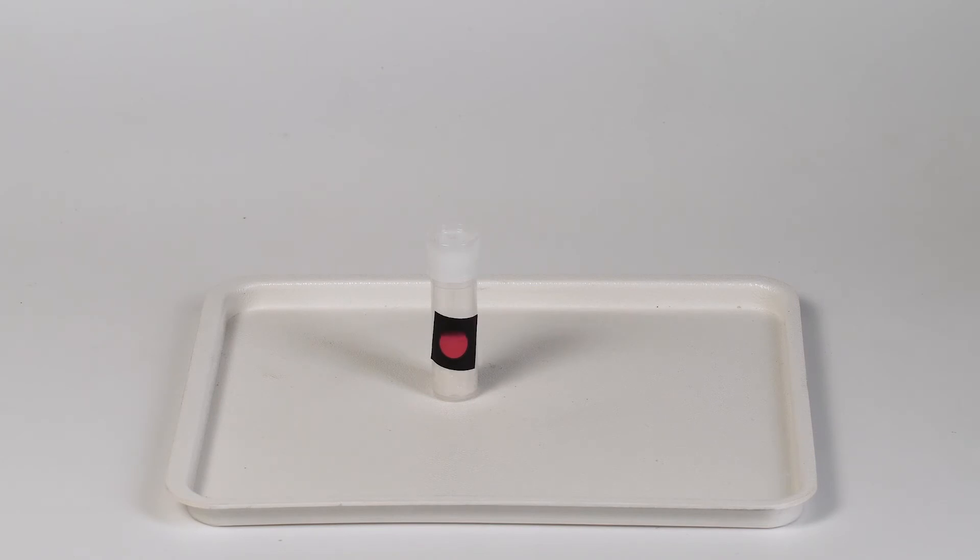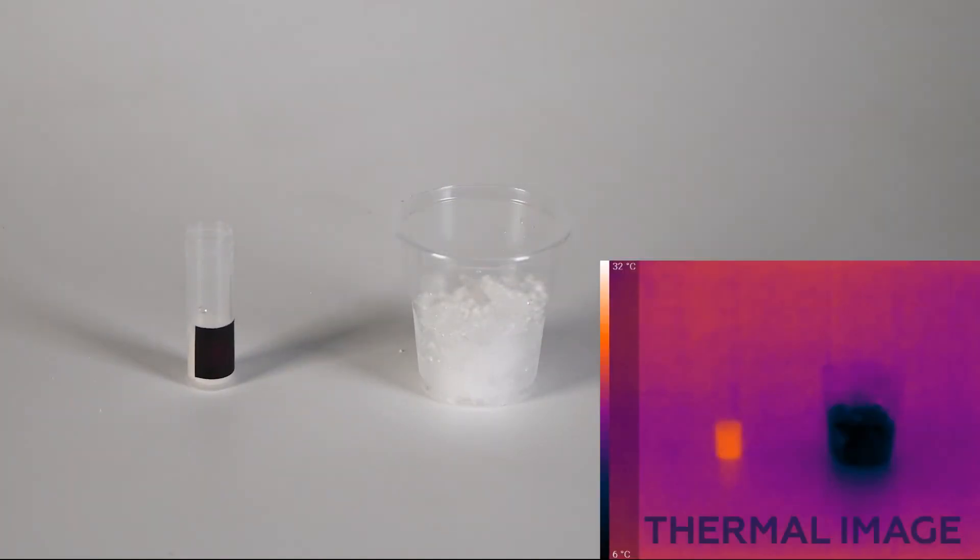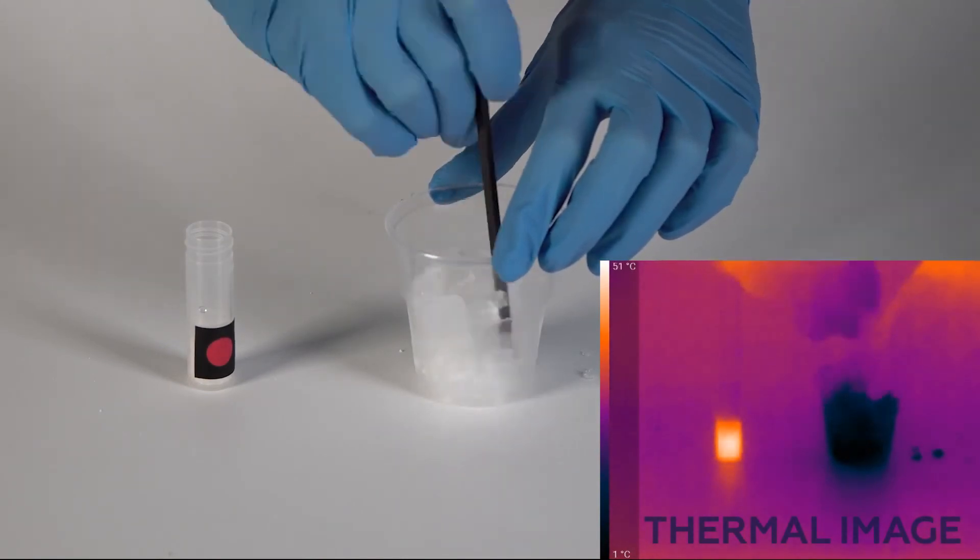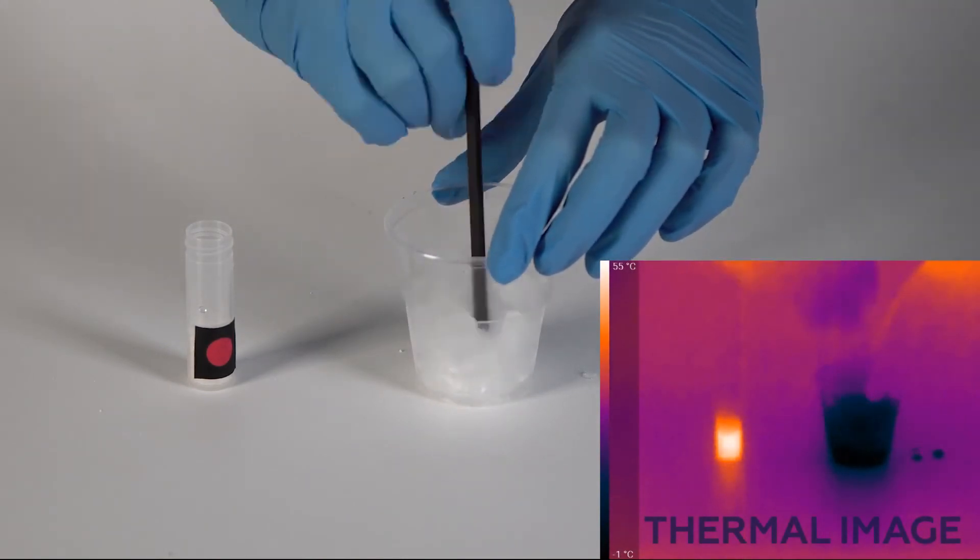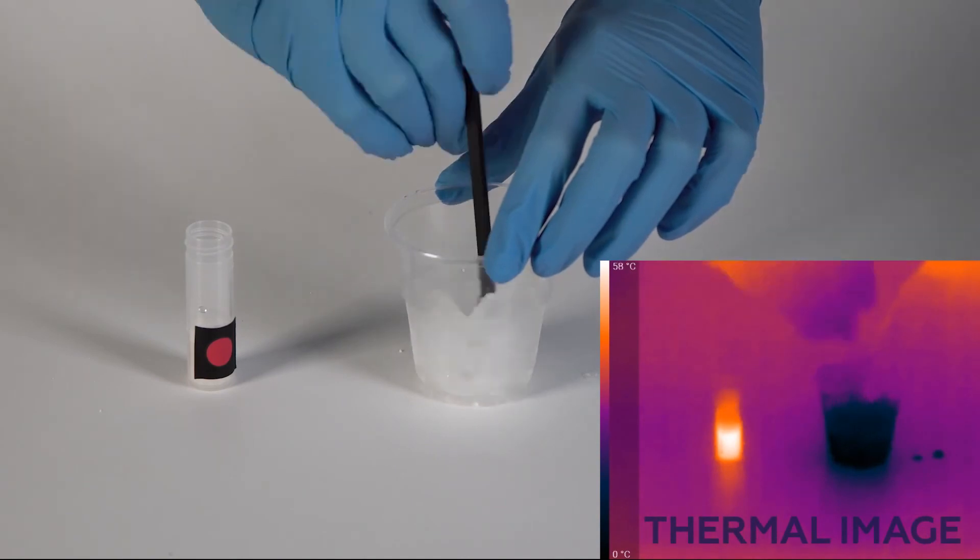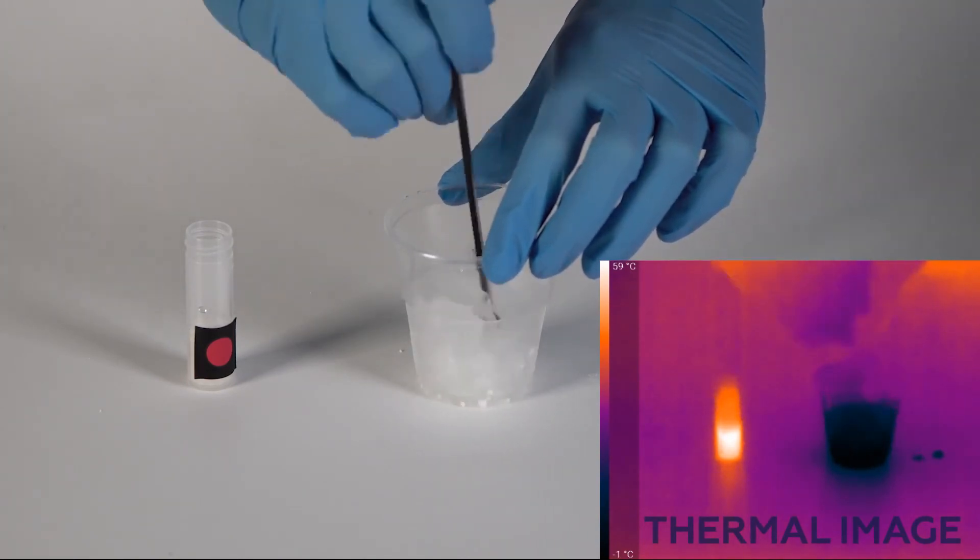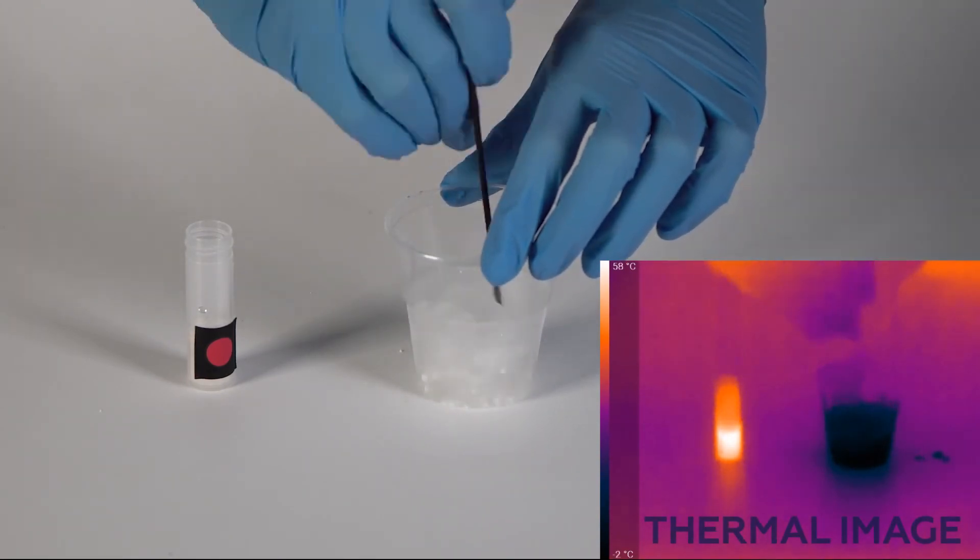The result of these two experiments proves that calcium chloride is indeed a chameleon. It both increases and decreases the temperature of water as it dissolves. However, the decrease in temperature when calcium chloride is added to the ice is much greater than the increase in temperature, and it doesn't prevent the cup from freezing to the stand.